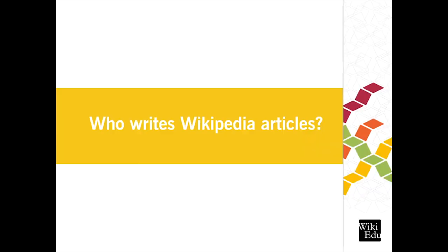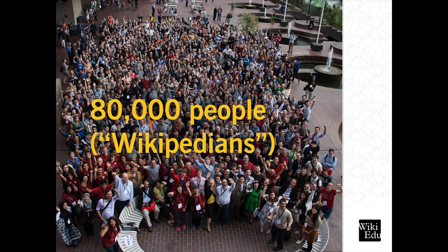We know millions of people are getting information from Wikipedia, but where does this content come from? We hear people asking us all the time, are you paid to edit Wikipedia? Well, no, that's not our job. Wikipedia is edited by volunteers. All content comes from volunteer editors, whom we call Wikipedians.